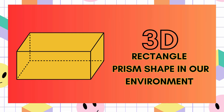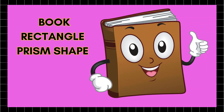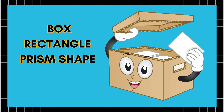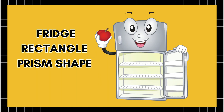3D Rectangle Prism Shape in our environment. Rectangle Prism Shape: Book. Rectangle Prism Shape: Juice Box. Rectangle Prism Shape: Box. Rectangle Prism Shape: Fridge.